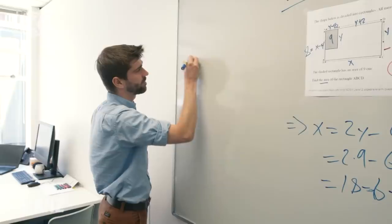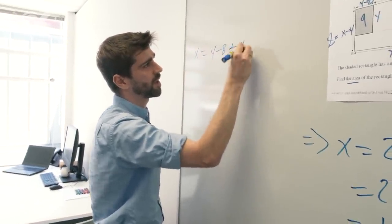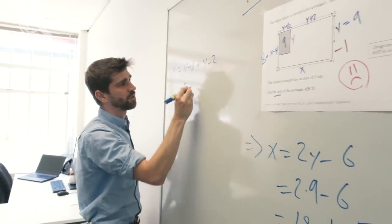Right, okay. So bottom is x, right-hand side is y minus 8 plus y minus 2, 2y minus 6.